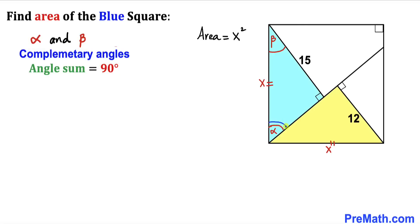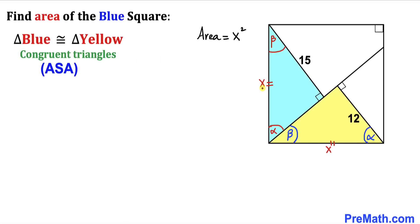Now let's focus on this angle alpha. We know this whole angle is 90 degrees, so therefore this angle has got to be beta, since alpha and beta are complementary angles. And since this is our 90-degree angle, this angle has got to be alpha. Therefore we conclude that the blue triangle and this yellow triangle are congruent triangles according to the Angle-Side-Angle theorem, and since both triangles are congruent, the opposite side of this angle must be 12 units.